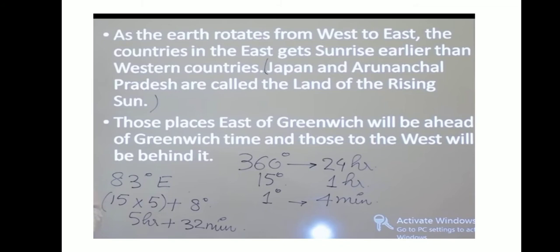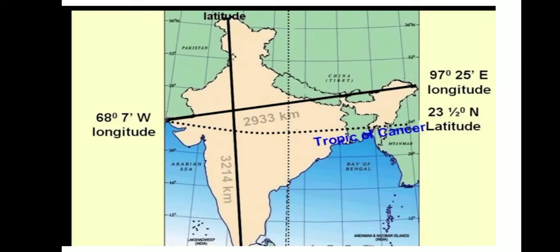If all places followed their local time, the change in time from one meridian to next would create a lot of confusion, especially in countries with large longitudinal extent. To deal with this problem, every country has a standard time. This is the local time of the meridian passing through its center. In India, the local time of the 82.5 degree meridian is adopted as standard time.